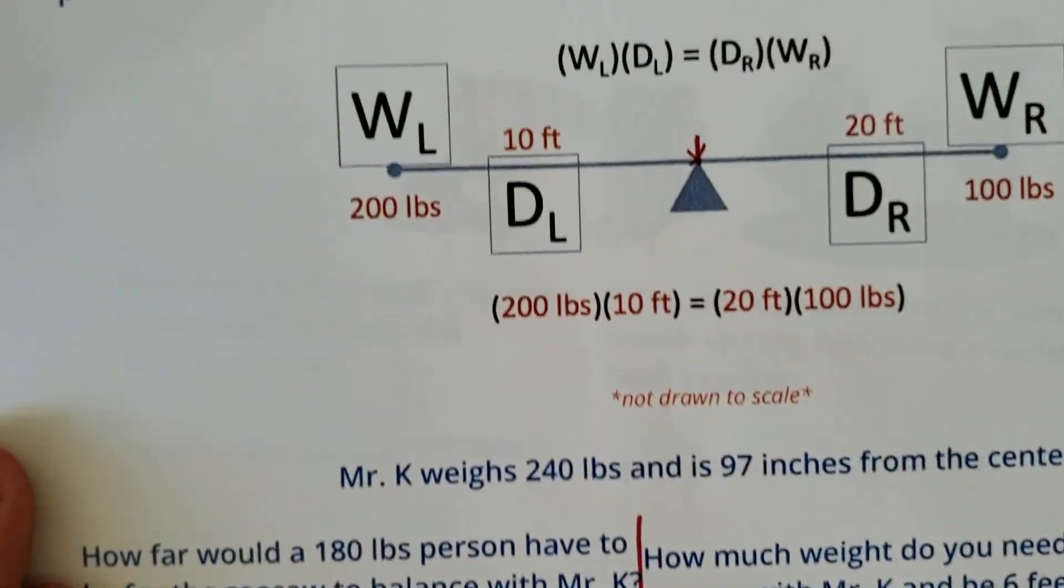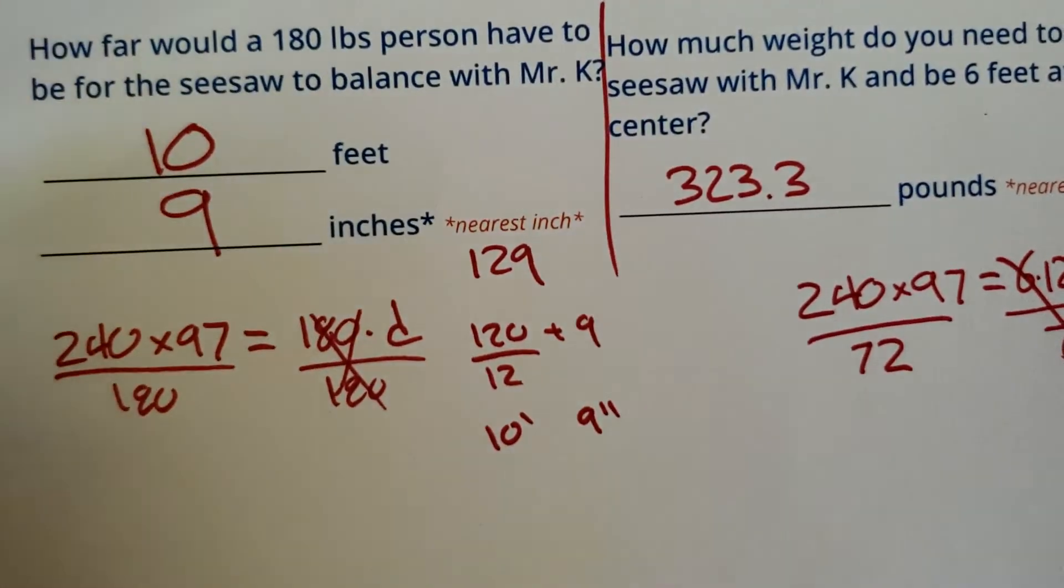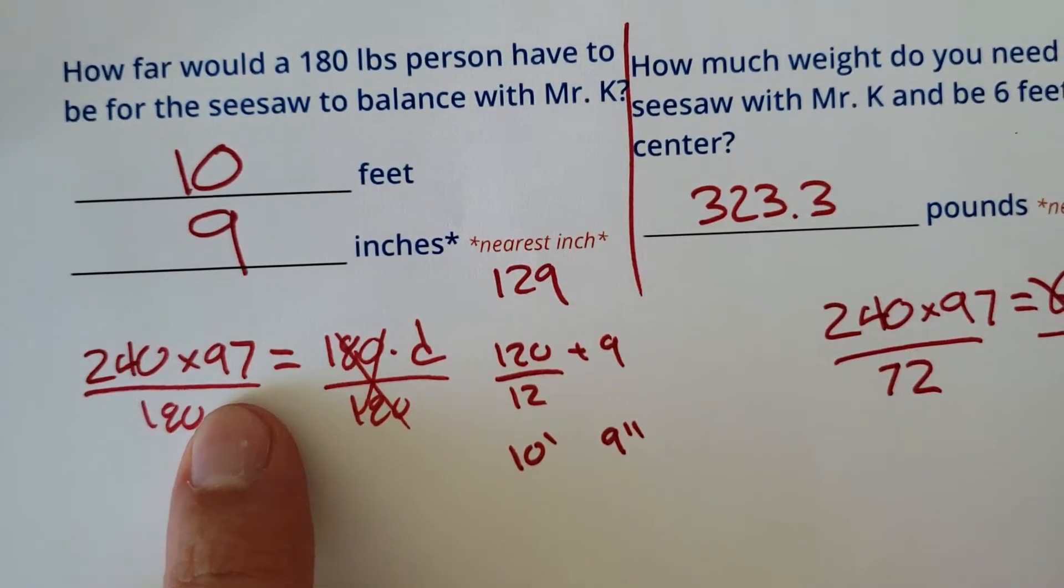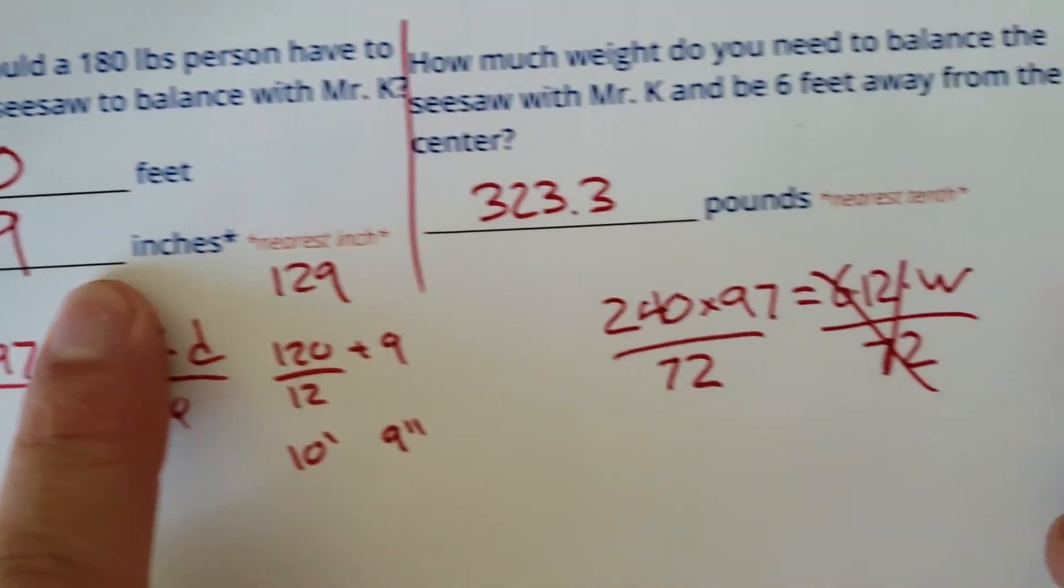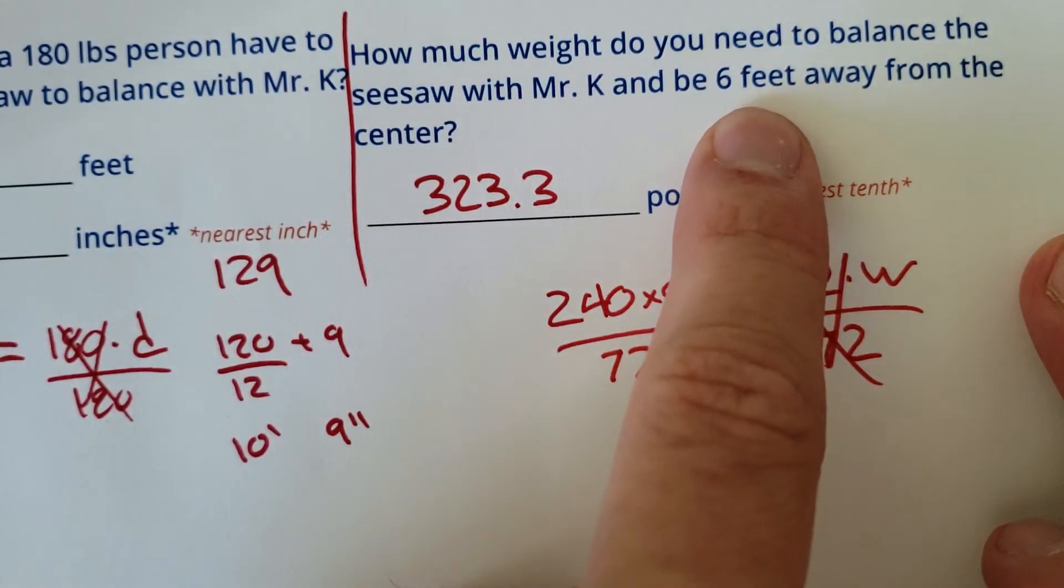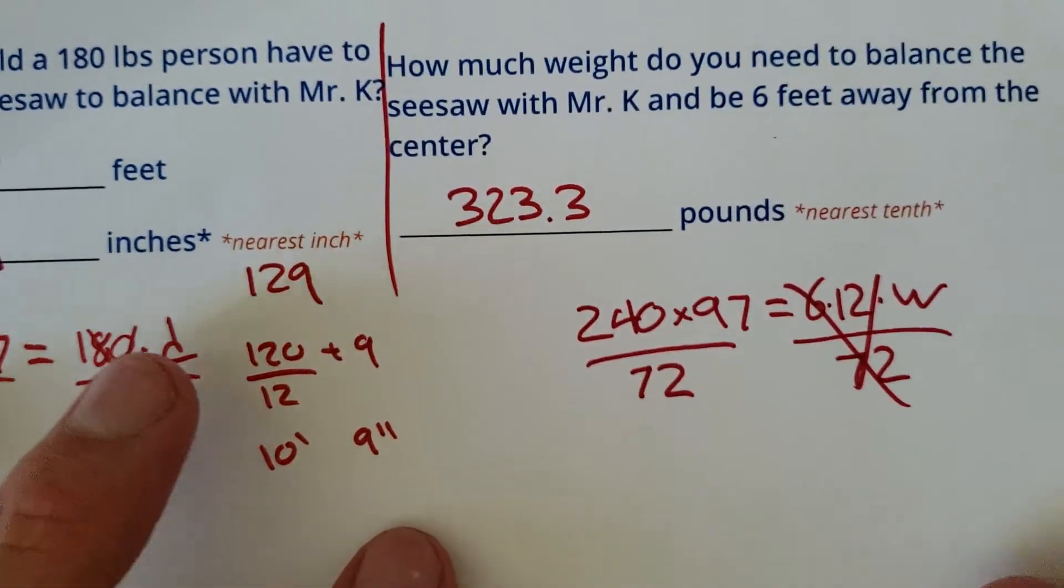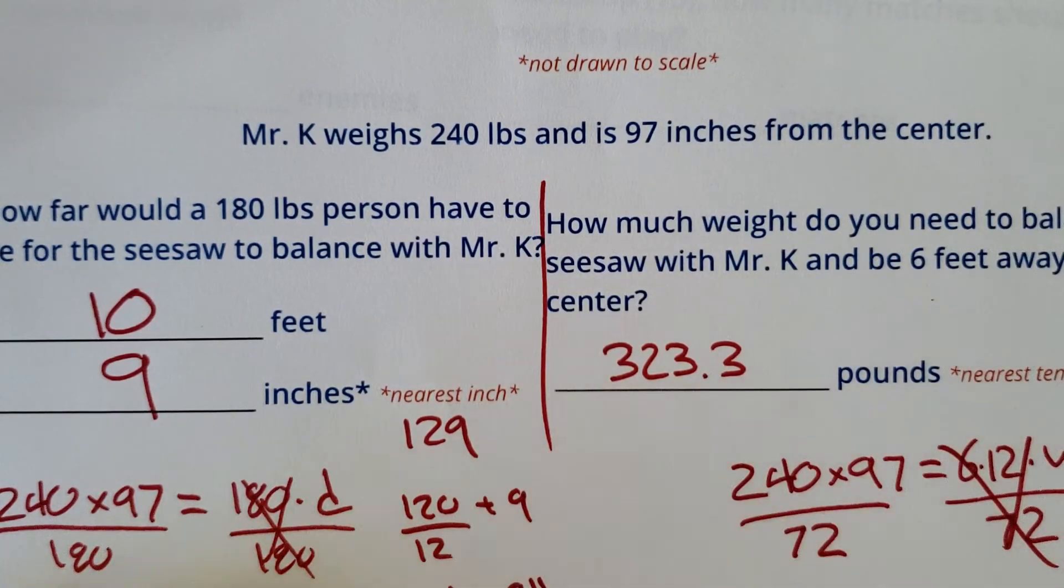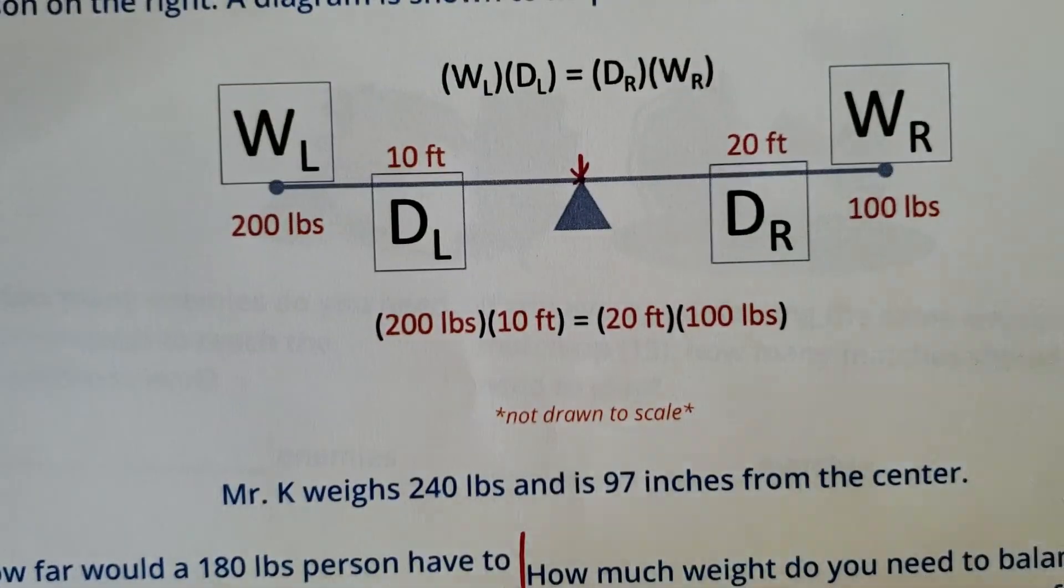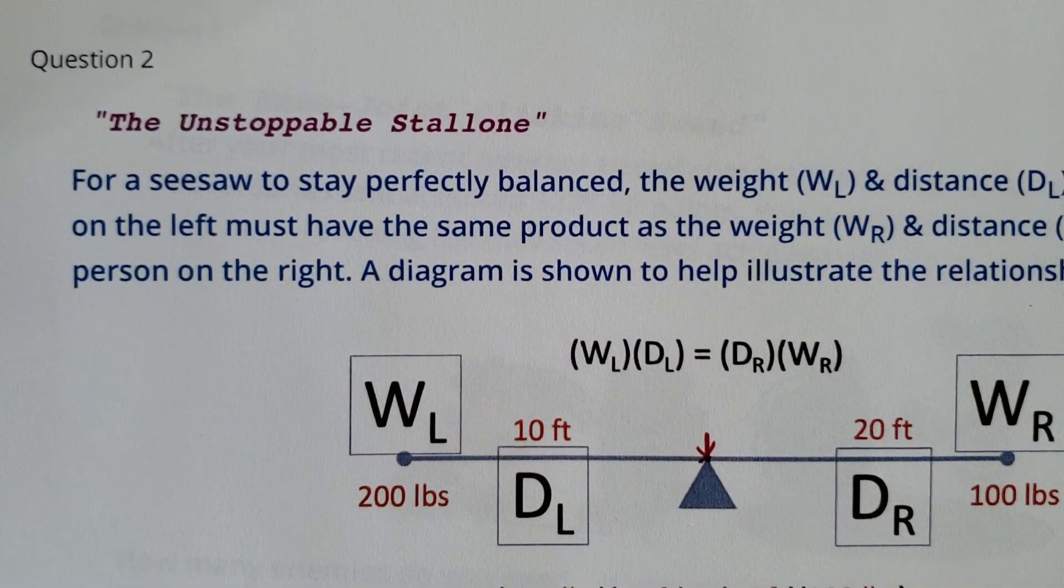That is the unstoppable Stallone with seesaws. All right, so it's actually pretty easy. The only tricky part is going to be, again, converting the total inches to feet and inches, and then feet and inches again. So this is more of a foot-inch problem than anything else. Otherwise, make your proportion accurately. You can put me on the left. You can put me on the right. I don't care. Set up your proportion and then do your math. All right, that's it for this one.